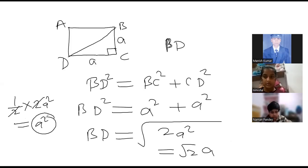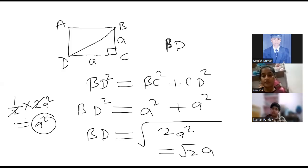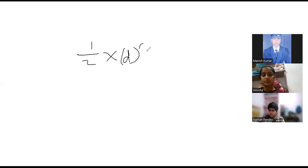Yes sir. So if you are given only the diagonal, then also you can find the area in terms of diagonal. How? You have to write half into diagonal square. Okay, if you are given the measurement of a diagonal of a square, you can find its area by using this formula: half into diagonal square. Understood? Yes sir.